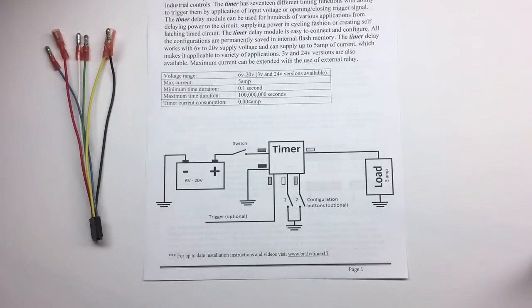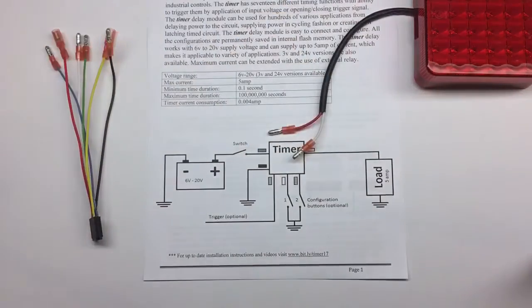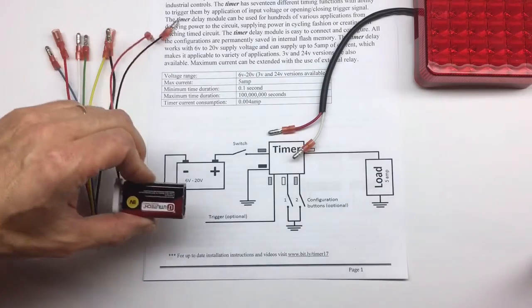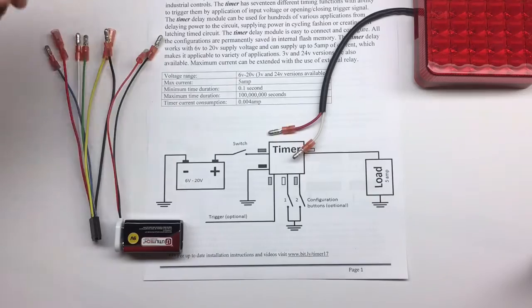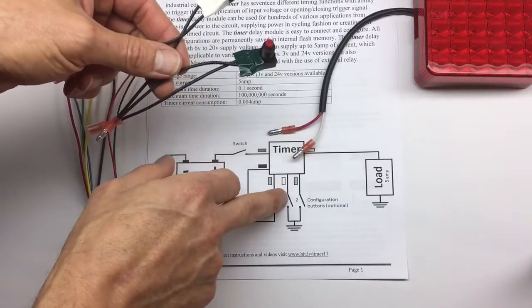I'm going to use the LED light as a load. I'm going to use a 9-volt battery as a power source, and I'm going to use two buttons as the configuration buttons.